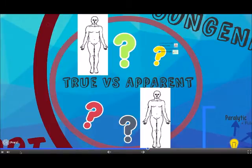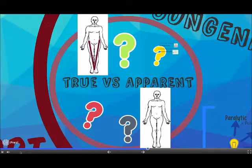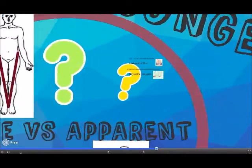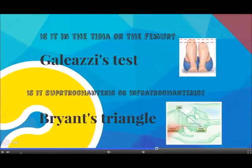Limb length discrepancy may be either true or apparent. True leg length discrepancy is detected clinically by measuring the distance between the anterior superior iliac spine to the ipsilateral medial malleolus and comparing it to the other side. Apparent leg length discrepancy is detected by measuring the distance between the xiphisternum or umbilicus to each medial malleolus. To establish whether a true discrepancy is in the femur or tibia, we can do the Galeazzi test, and to determine if a femoral discrepancy is above or below the greater trochanter, we can use Bryant's triangle.